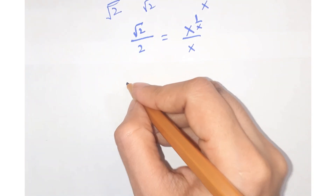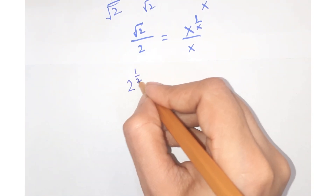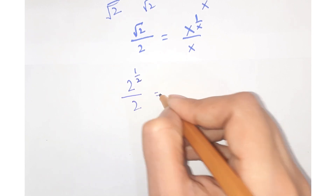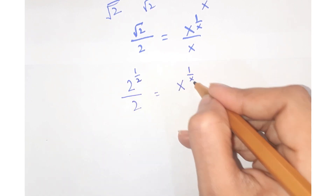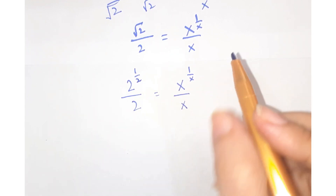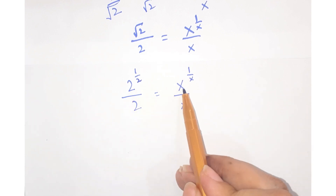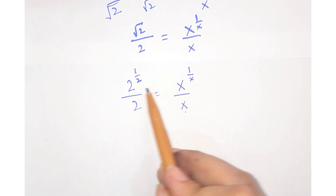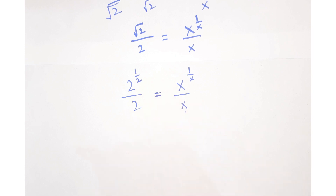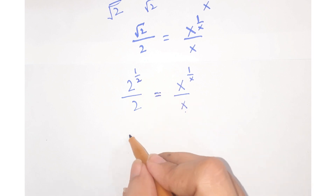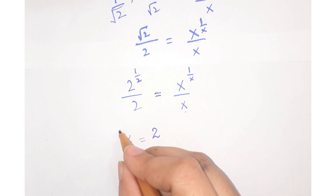Further, you can write this as under root 2 equal to 2 to the power 1 upon 2. Now comparing the left hand side with the right hand side, you can see that x has a value equal to 2.